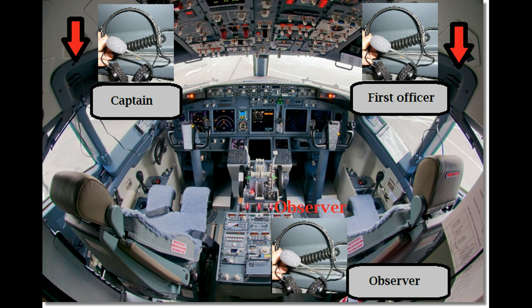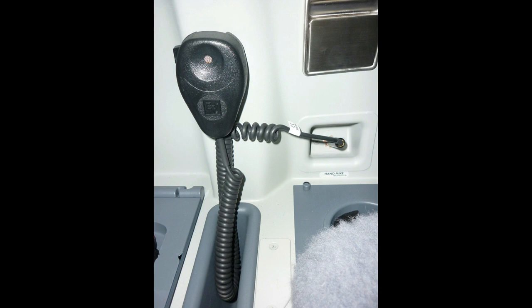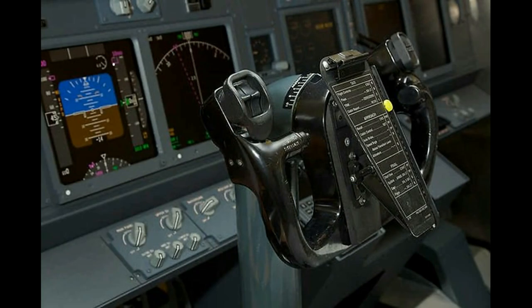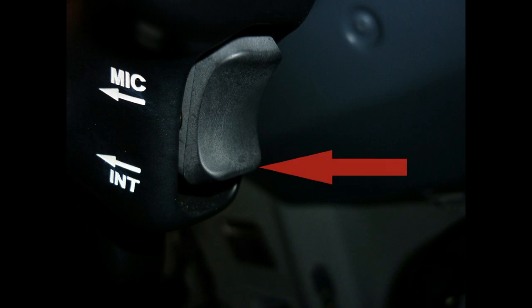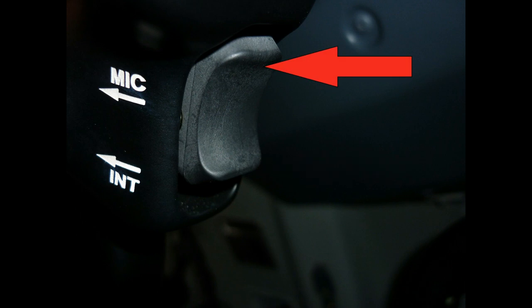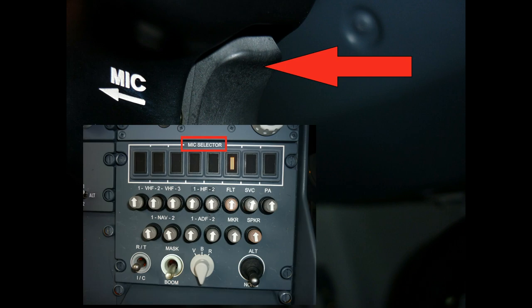Earlier I mentioned that in order to talk on the boom mics, you had to press a button. But which button? There's at least two buttons on this flight deck, and the one mounted on the hand mic is not one of them — all that button does is let you talk on the hand mic. If you take a look at the outboard horn of either control column, you'll see a two-way switch. It's conveniently mounted so the pilot does not have to remove their hands from the control column to operate it. The bottom one is labeled INT, meaning interphone, but we actually want to press the top button labeled MIC for microphone. Whenever you press this button, whichever mic button you have selected on the audio control panel is where you'll be transmitting.